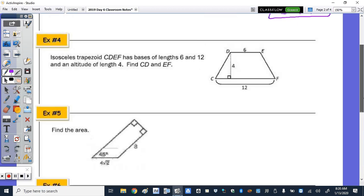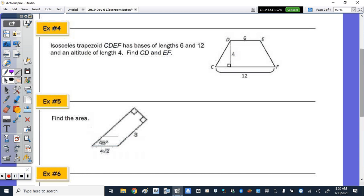And number 4, we have an isosceles trapezoid. So the legs are congruent. And bases are parallel in every trapezoid. The bases are lengths of 6 and 12 and the altitude is 4. Find CD and EF. So those are the legs. So what I'm going to do is draw another altitude from vertex E.